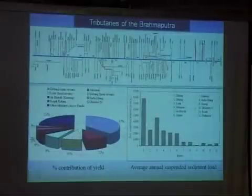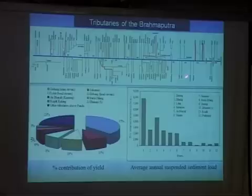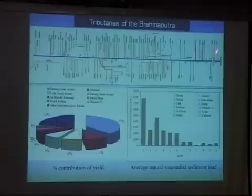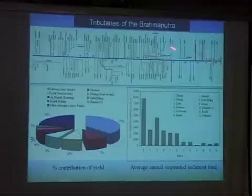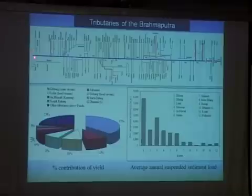This diagram was developed by one of my research scholars. We are trying to have a sediment budget and water budget for the entire Brahmaputra, starting from Dibrugarh, not exactly from Kobo. The red ones are the major tributaries like Dihang, Siang, Lohit, and Subansiri, as we move till the border of Bangladesh.